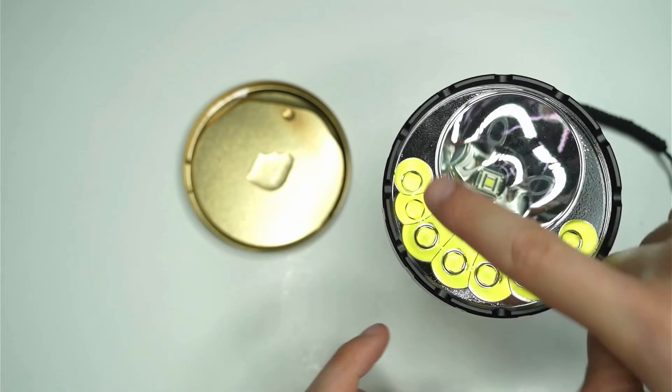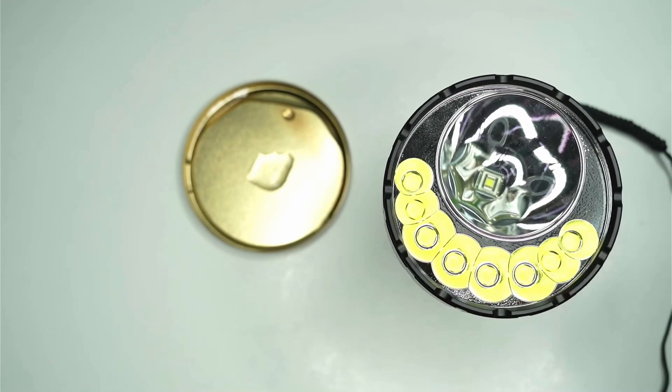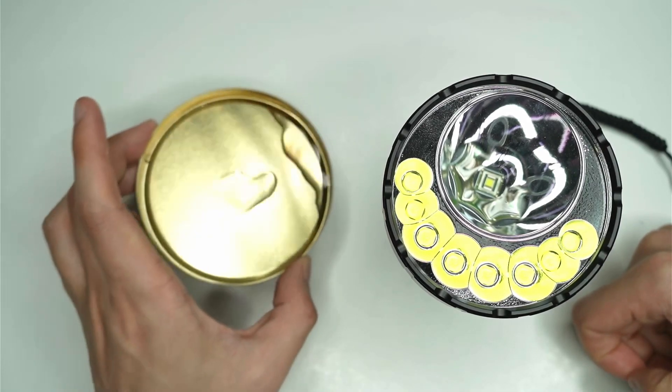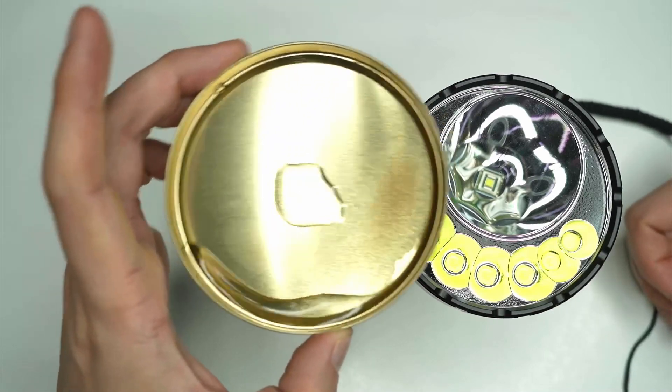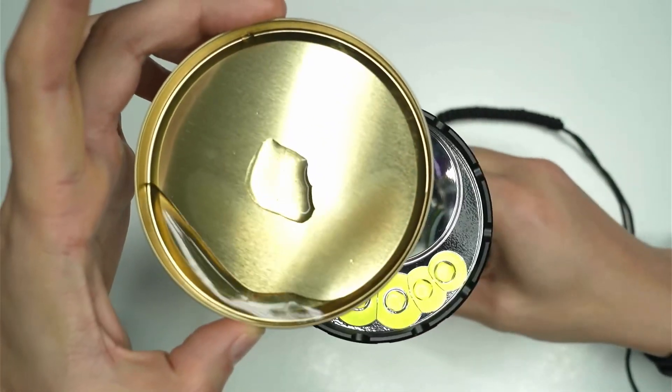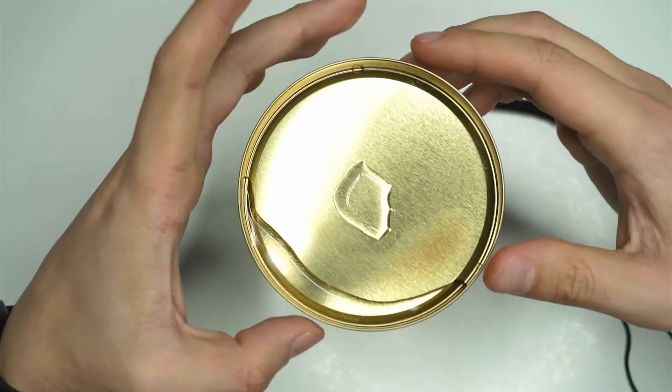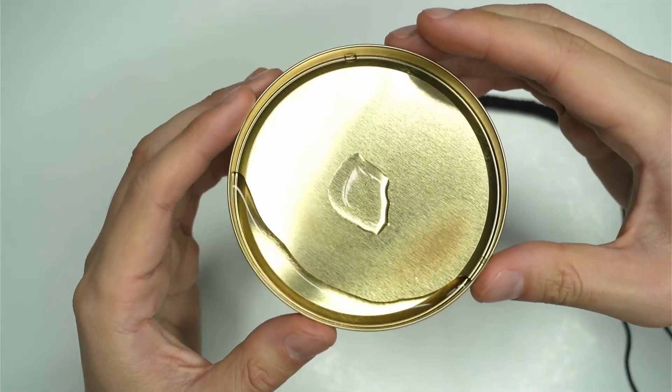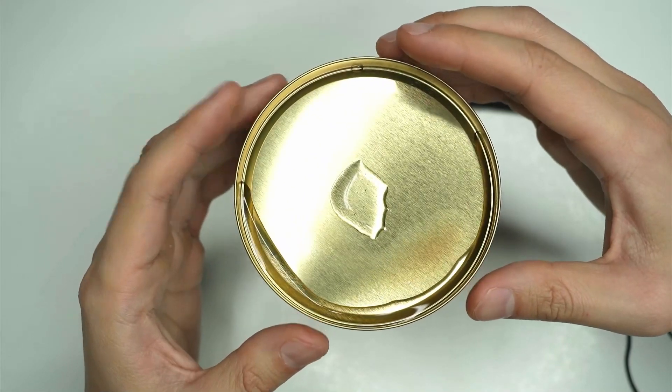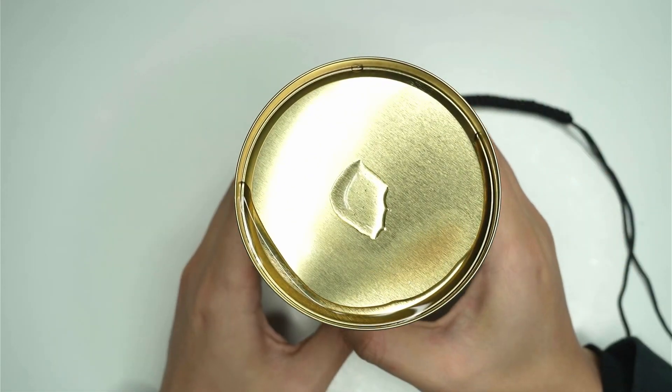And I find that at the section here where you've got the XHP 70.2, they actually create a lot more heat than the SBT 90. So what I'll do is I'll start, maybe I'll shift a bit of this water over so that it kind of overlaps with these LEDs and we'll see what happens there.